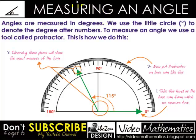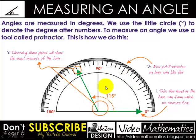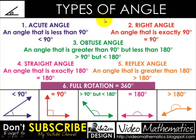Now we will learn about how to measure an angle. Angles are measured in degrees — we use the little circle symbol to denote the degree after numbers. To measure an angle we use a tool called a protractor. Take one arm as the base arm from which we measure the turn, then put the protractor on the base arm and observe the turn to find the exact measure.